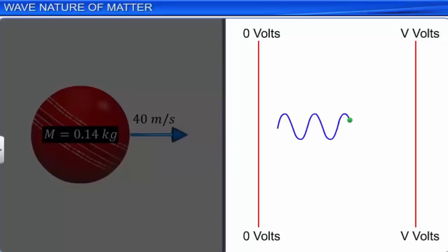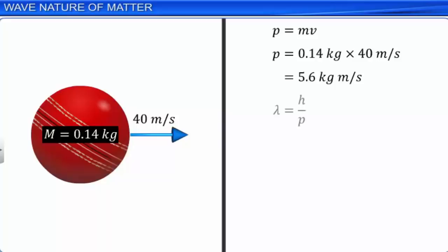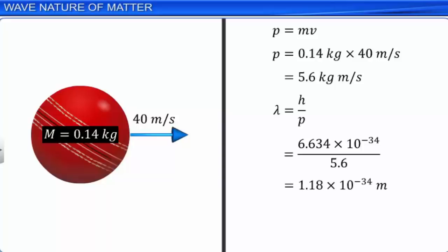The momentum of the ball, p, is equal to 0.14 kg × 40 m/s, which equals 5.6 kg·m/s. The De Broglie wavelength is calculated by dividing Planck's constant by the momentum of the ball: 6.634 × 10⁻³⁴ divided by 5.6 kg·m/s, which equals 1.18 × 10⁻³⁴ meter.